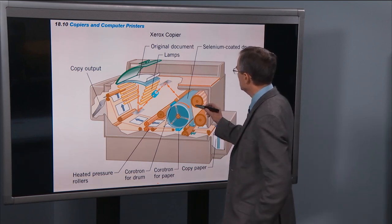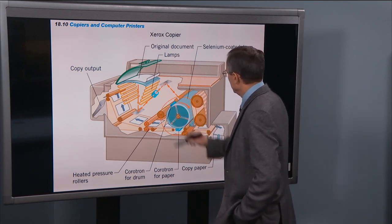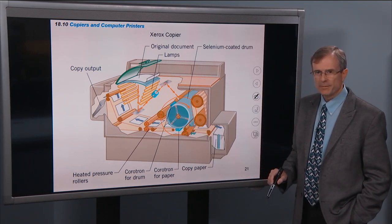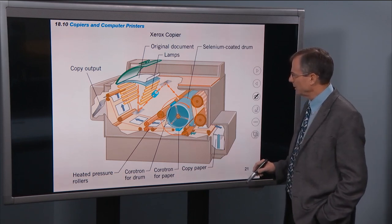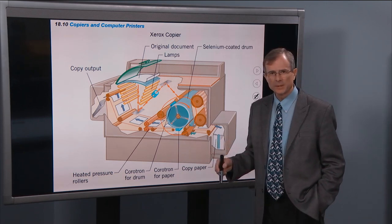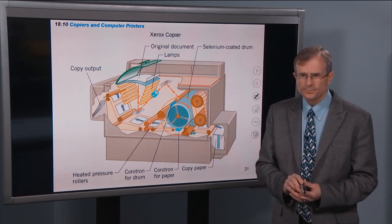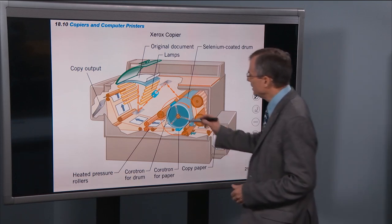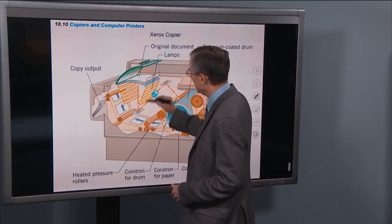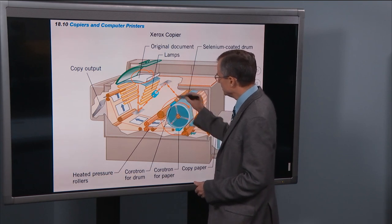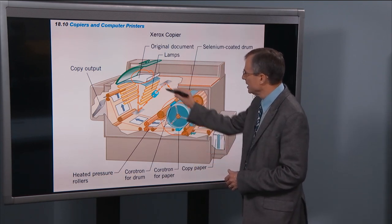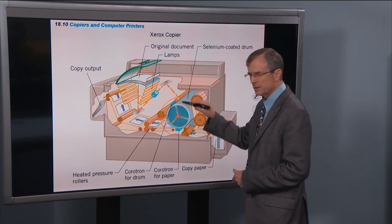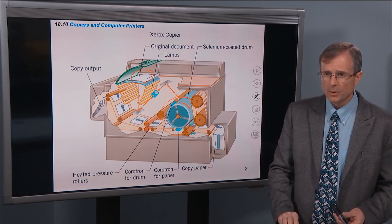And at the heart of them is the drum. This xerographic drum is an aluminum drum coated with selenium. And what you can see here is the piece of paper that you're making the copy of. There's some imaging, some mirrors, and some lenses and things that send that image onto this drum.